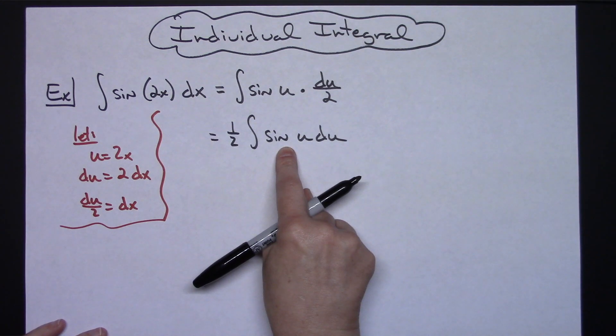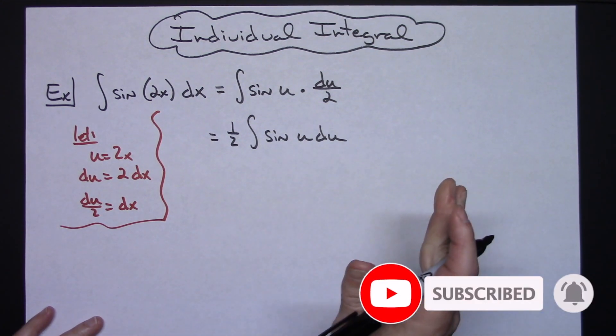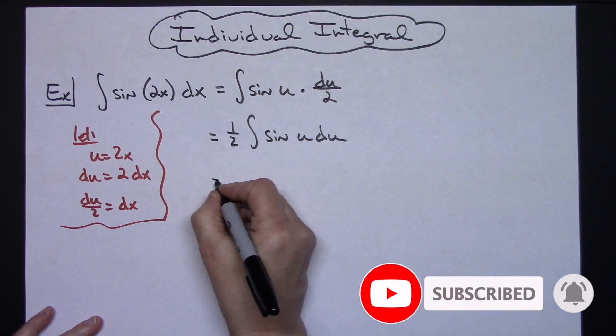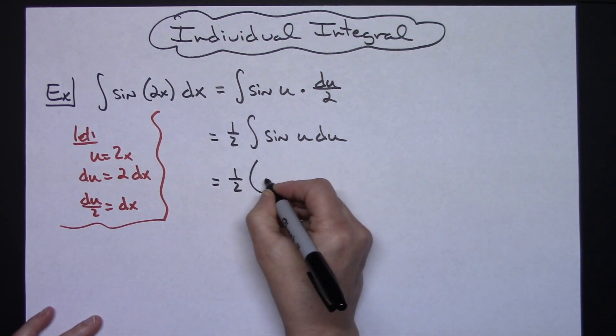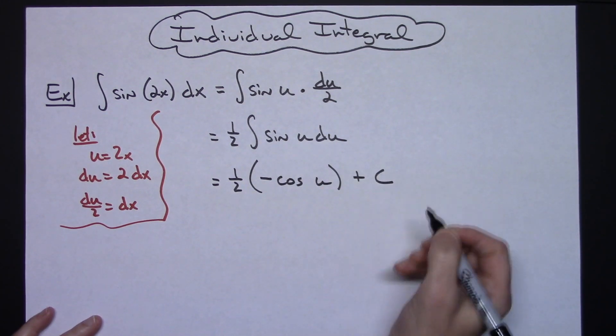At this point integrating sine gives you a negative cosine. Straight integration, hopefully you have those memorized. So then I'll have a 1 half times a negative cosine u and we can go ahead and put plus c on there.